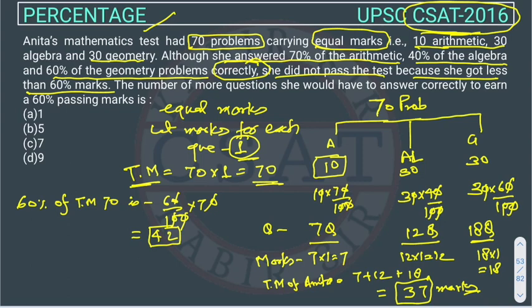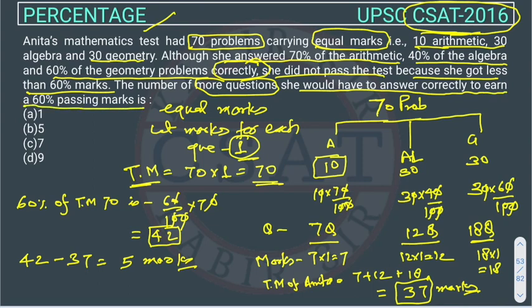But she got 37. So how many marks are less than the 60% marks? 42 marks minus 37 marks equals 5 marks. Now he is asking the number of more questions she would have to answer correctly to earn a 60% passing marks. So she has to earn 5 marks more to pass the exam.